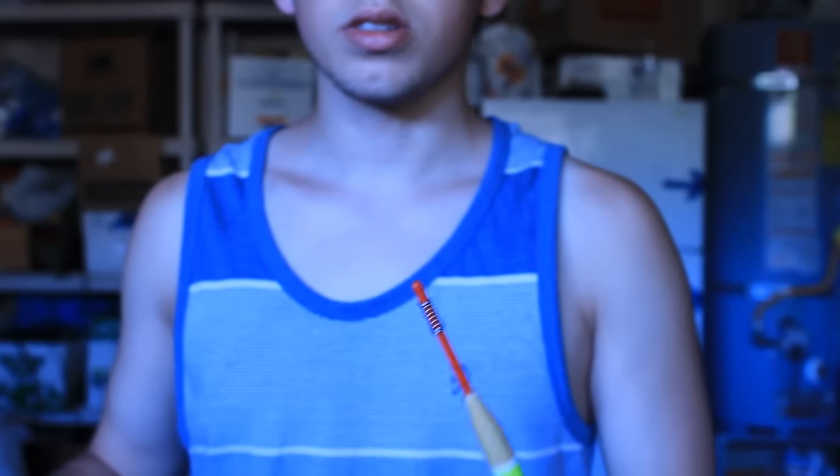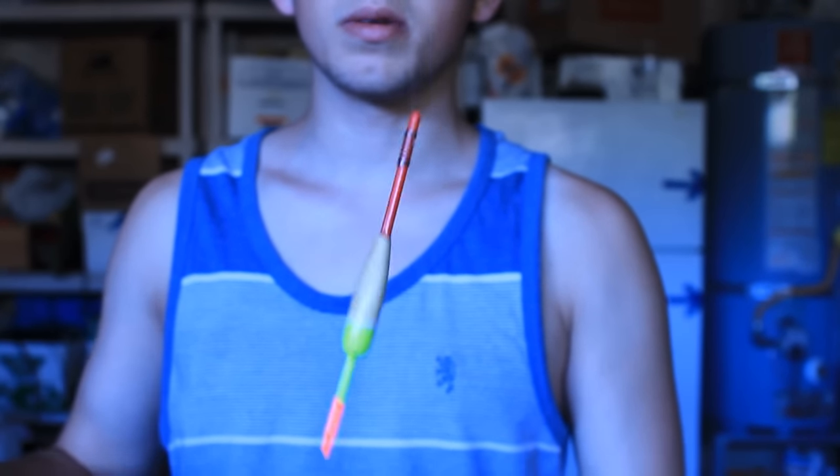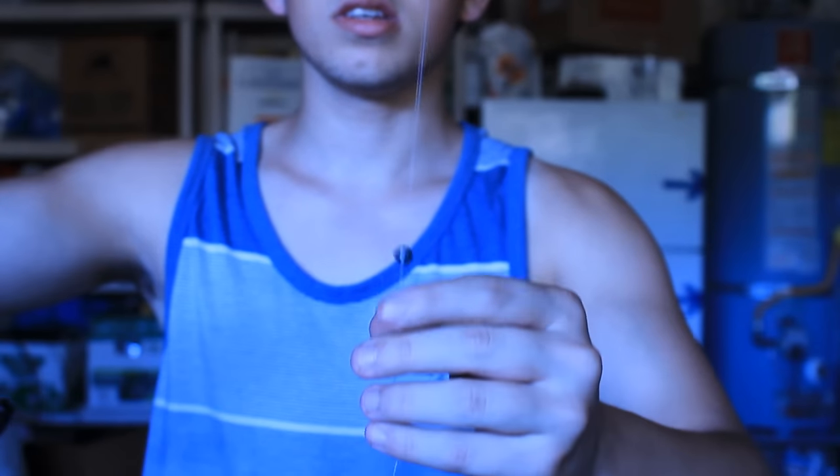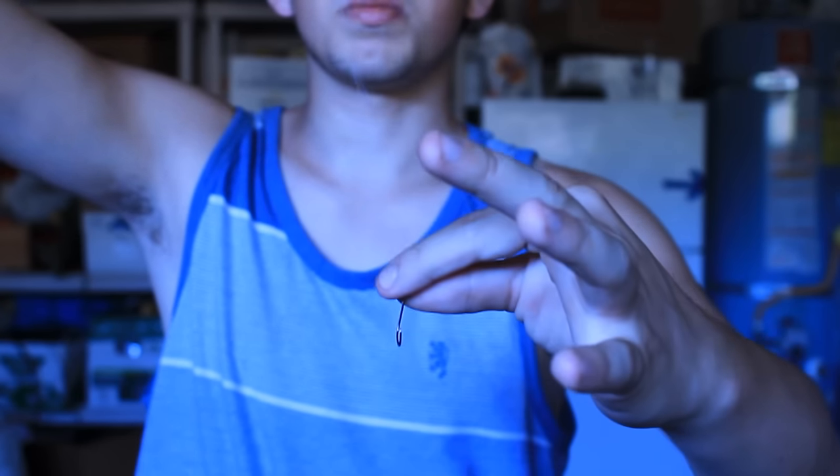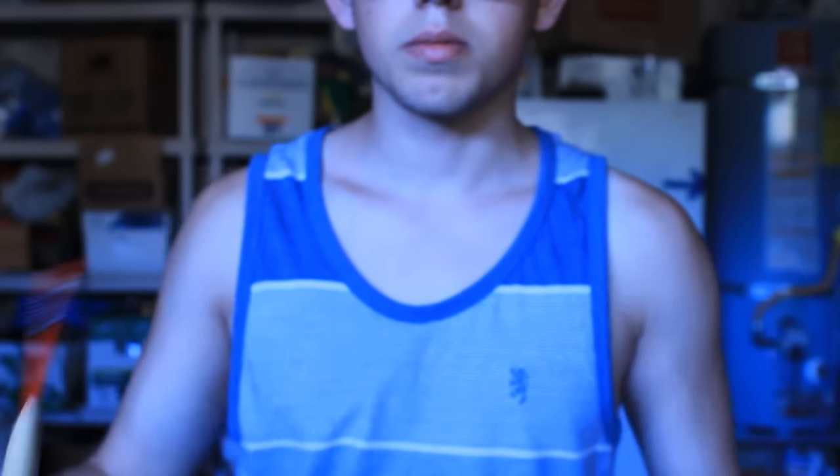Now the finished product should look something like this. You got your bobber going down the line, you got your weight going more down the line, you got your hook, and that's where you put on your bait. I recommend worms. And yeah, that's pretty much it.